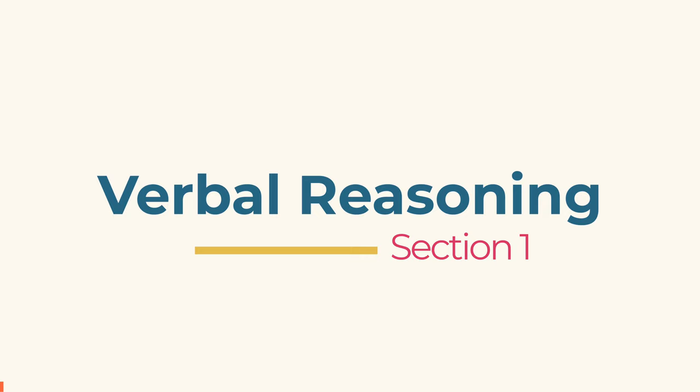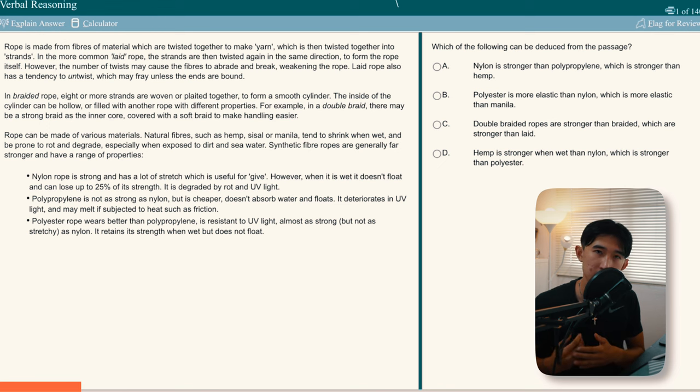So for verbal reasoning, we have to do 44 questions in 21 minutes, and that results in around 30 seconds per question. That is not a lot of time at all, considering the nature of the questions of reading comprehension. VR is definitely one of the hardest and toughest sections, and it's generally one of the most poorly done UCAT sections. The previous UK verbal reasoning average scores for 2021 is 586, for 2020 is 570. From 2015 to 2021, all of the verbal reasoning scores are below 600. Considering it's the first section of the UCAT, it can demotivate a lot of UCAT test takers.